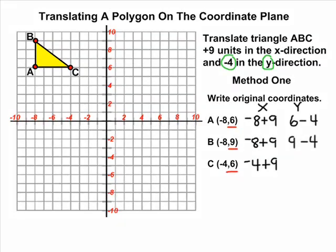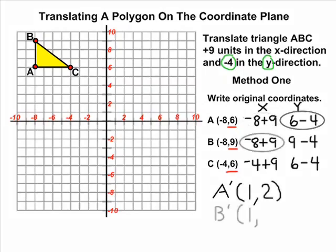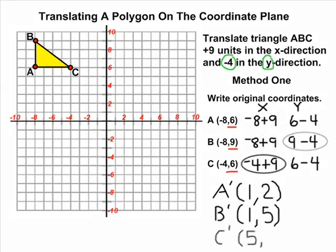After adding 9 to all of the original x values and subtracting 4 from all of the y values, we will get the new ordered pairs for A, B, and C after the object has been translated.